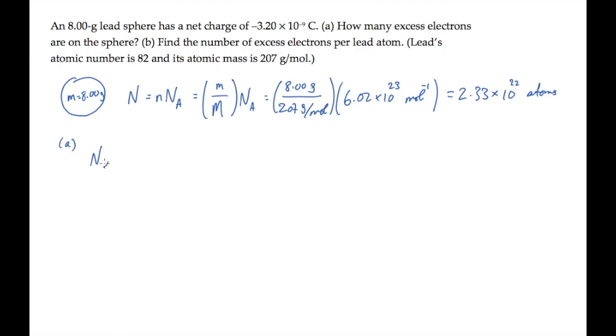Now in part A, we're asked to find the number of excess electrons on the sphere. That number, n sub e, is the excess charge, or net charge, divided by the charge per electron.